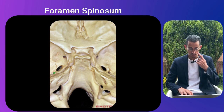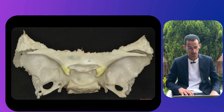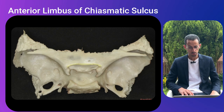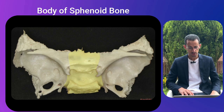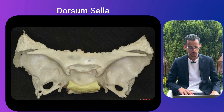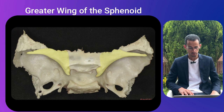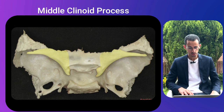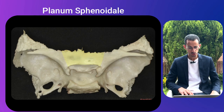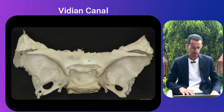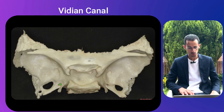The next picture shows the sphenoid bone in detail: the anterior clinoid process, the anterior limbus of the chiasmatic sulcus, the body of the sphenoid, the chiasmatic sulcus, the dorsum sellae, foramen ovale, foramen rotundum, foramen spinosum, the greater wing, the lesser wing, the middle clinoid process, the planum sphenoidale, the posterior clinoid process, the sella turcica, the tuberculum sellae, and the Vidian canal. Review this image multiple times to become familiar with all components of the sphenoid bone.